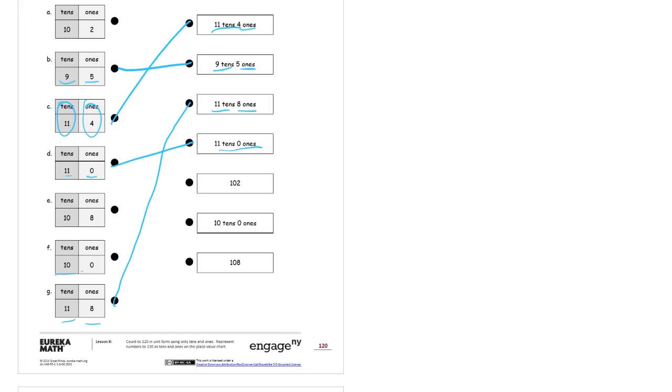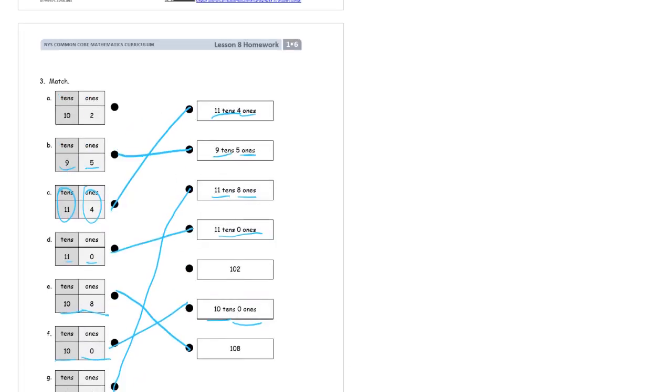And 10 tens, zero ones. That's 10 tens, zero ones. Here it is. Right there. 10 tens, eight ones. That's the number 108. And then we have, up at the very top here, 10 tens, two ones. That's the number 102. So it'll match up there. And now everything's matched up.